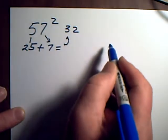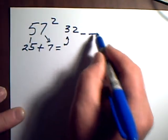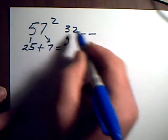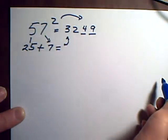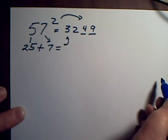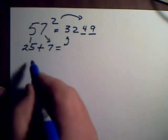Then in the two spots after the 32, put in seven squared, and there's your answer: 3249.